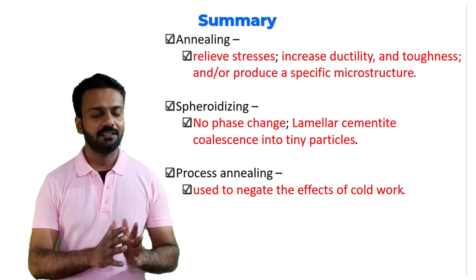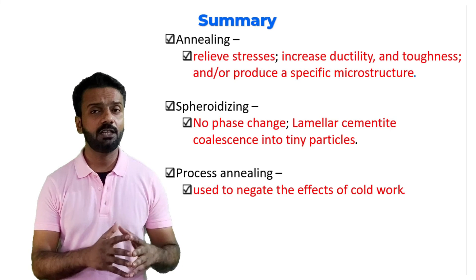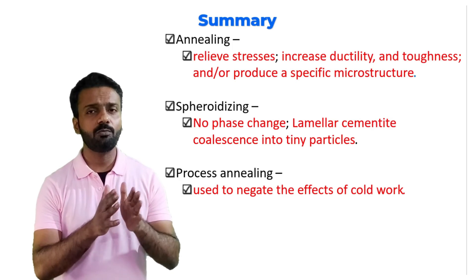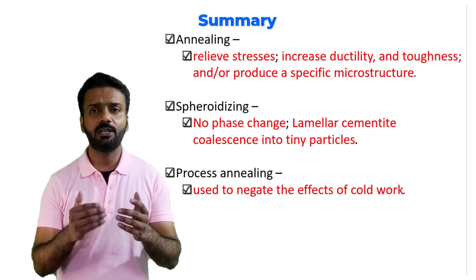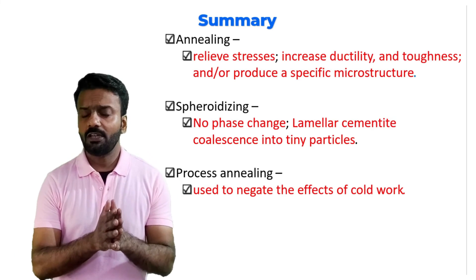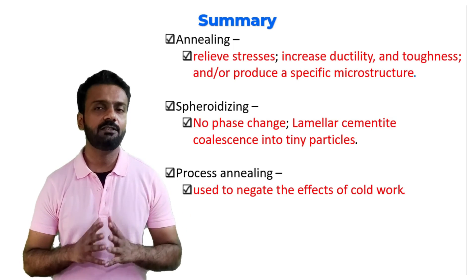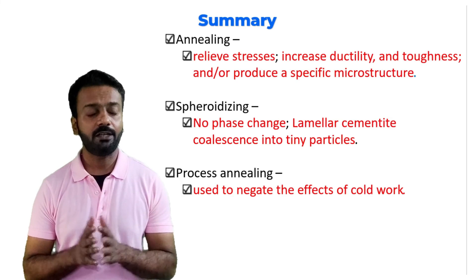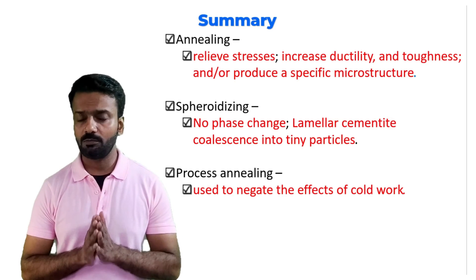To summarize, we have seen four types of heat treatment related to annealing: full annealing, spheroidizing, process annealing, and stress relief annealing. Full annealing is done to relieve internal stresses, increase ductility, make the material tougher, and obtain a specific microstructure. Spheroidizing is done to make the material even softer and more machinable when annealing alone is insufficient for pliability.